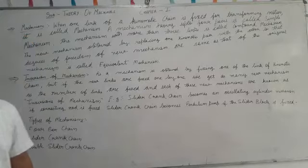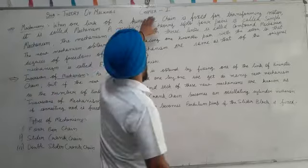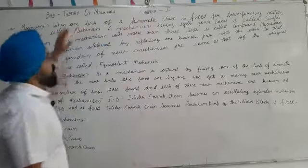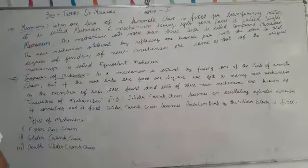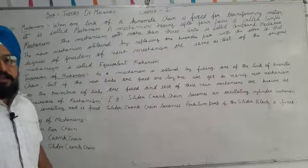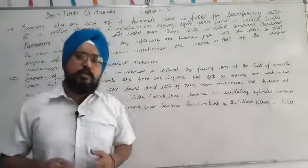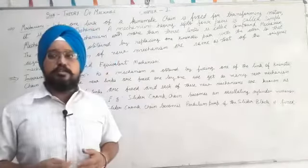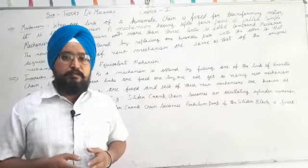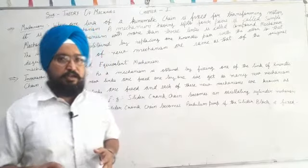Hello students. Today is the sixth lecture of our first chapter, Introduction of Subject Theory of Machines. In the first five lectures we have discussed the definition of machine, kinematic link, constrained motions, kinematic pair, and kinematic chain.